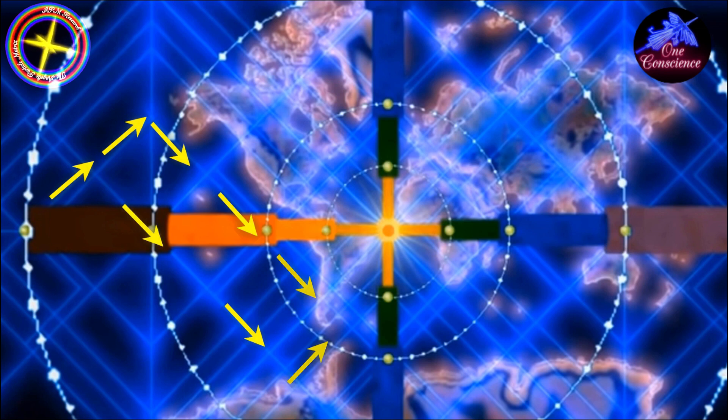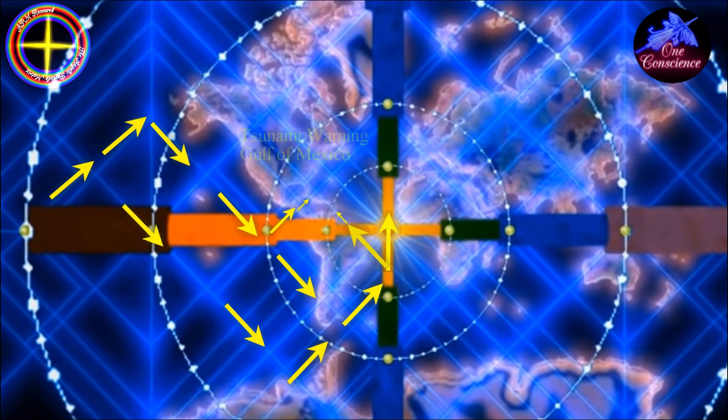As it travels down the pipeline it will then spread out in different directions. When it hit the South Sandwich Islands it will then follow the grid up northward and spread out along the grid. This is why the Gulf of Mexico got a tsunami warning when the South Sandwich Island quake occurred.